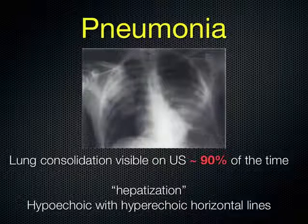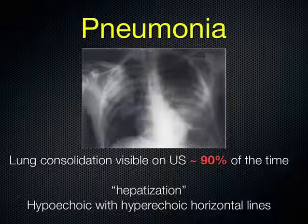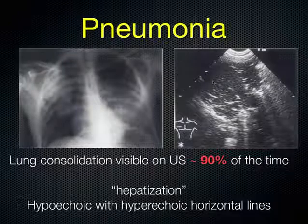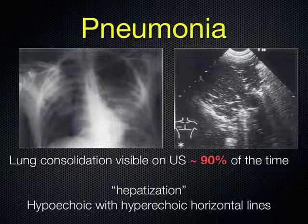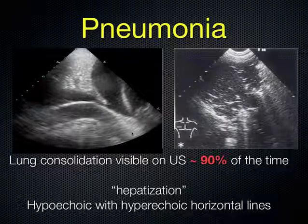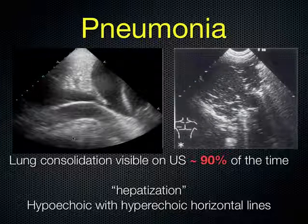Moving on to pneumonia — about 88 to 90% of consolidations can be seen with ultrasound. The characteristic features are hypoechoic consolidations with hyperechoic lines running through. For example, the hypoechoic dark lung has been infiltrated with fluid such as pus or atelectasis, and hyperechoic horizontal lines represent the bronchograms. Another example with a low-frequency probe shows the diaphragm, pleural fluid, and compressed lung with bright white hyperechoic structures — something we call hepatization of the lung, meaning the lung has taken on a more solid organ appearance.